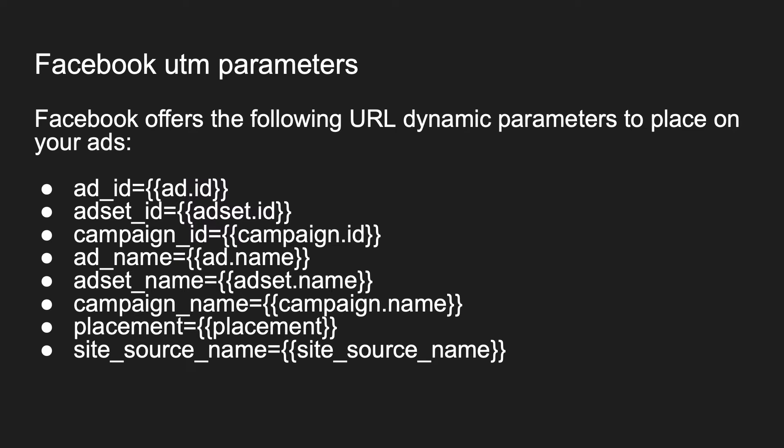Facebook's dynamic UTM parameters are: ad ID, ad set ID, campaign ID, ad name, ad set name, campaign name, placement, and site source name. For our solution, the most important part is ad set ID, because it is the unique identifier of your ad set. At the ad set level we mainly optimize campaigns, and this number doesn't change when we change the ad set name. Additionally, we will use campaign name and placement.